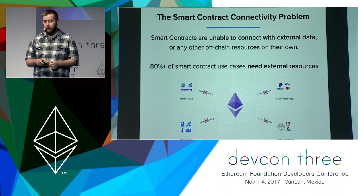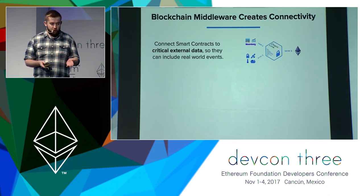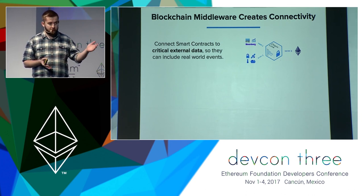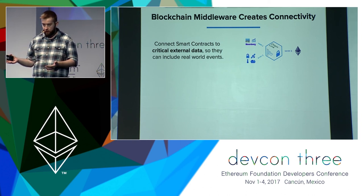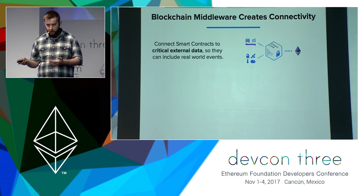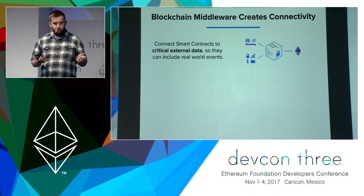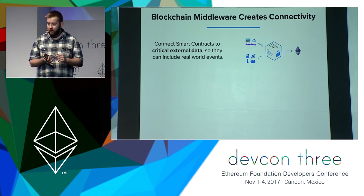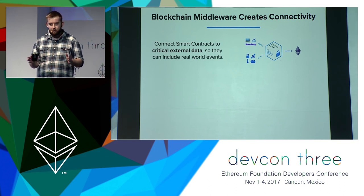The approach to solving that problem is basically middleware. You create a piece of middleware that takes the external inputs, turns them into something that the contract on-chain can interact with, and you have the middleware provide those inputs to the contract. Those inputs can be any kind of data feed, IoT input about delivery, any input that an application needs.